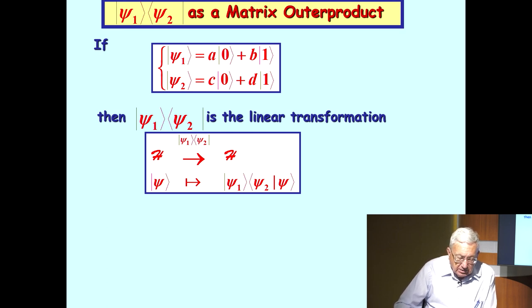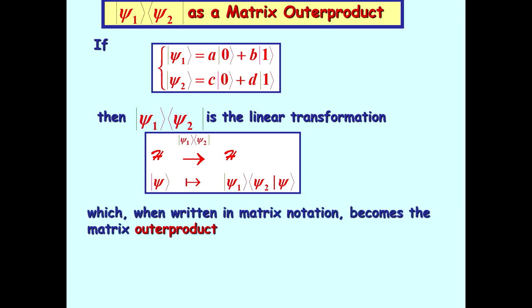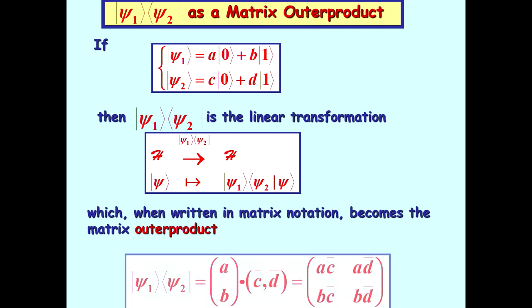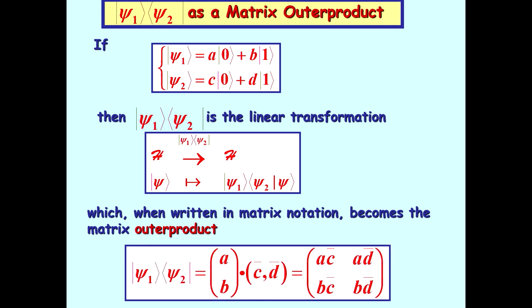And what this does is it takes each ket in the Hilbert space H to a new ket. And that ket is formed by first applying the bra, which is a linear transformation. It maps it to a complex number, which is the bracket, and that complex number times psi one. Which when written in matrix notation becomes what I've called before the outer product, which is simply matrix multiplication.